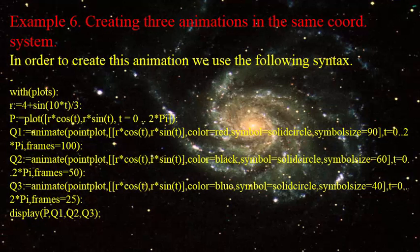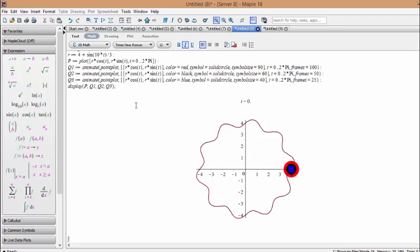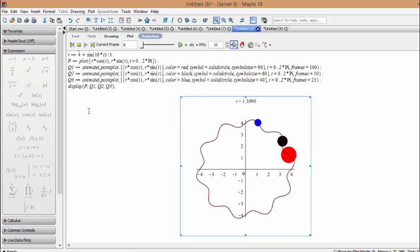Example 6: Creating three animations in the same coordinate system. In order to create this animation we use the following syntax. By copying and pasting the commands here we can get the following plots. By clicking on each plot we can activate the tools for animating the plot.